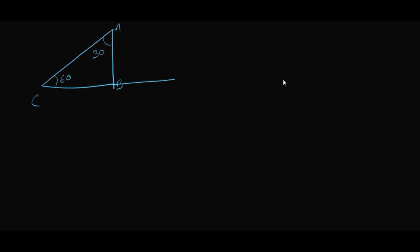Now let's talk about 30° and 60°. For that we take a triangle which includes 30° and 60°. Let angle B be 90°, angle C be 30°, and angle A be 60°. We extend CB to D such that BC equals BD, and join AD. Since BC equals BD by construction and angle B on either side is 90°, let BC equal x; then BD also equals x.